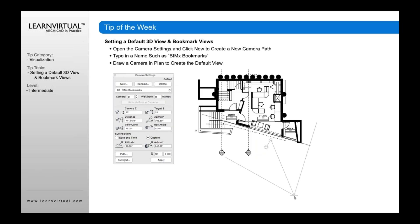Once you've done that, you want to draw a camera in the plan to create the default view. Whatever is the first camera within the camera settings is going to be the default view when you publish this. So even if you draw no other cameras, as long as you've got this selected and that one camera selected, that will be your default view for your BIMx model.